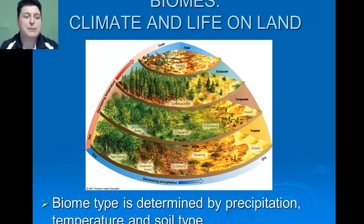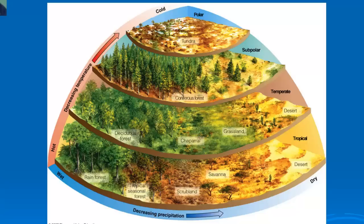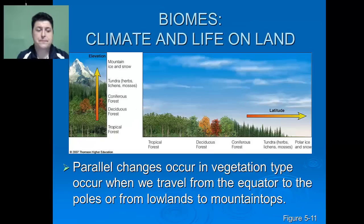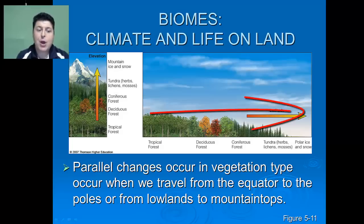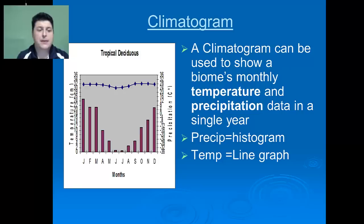Biome type is going to be determined primarily by precipitation, temperature, and the type of soil that's present. Over the course of this presentation we're going to examine the three major biome types including desert, grassland, and forest. It's interesting that we actually see parallel changes that occur in vegetation type as we go from the equator to the poles or from the lowlands to the mountaintops, and a lot of this is due to the differences we're seeing in temperature and precipitation.